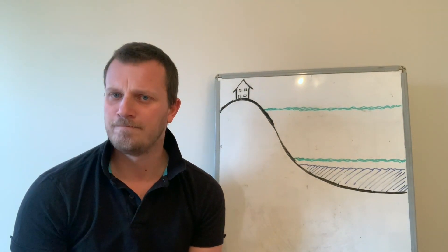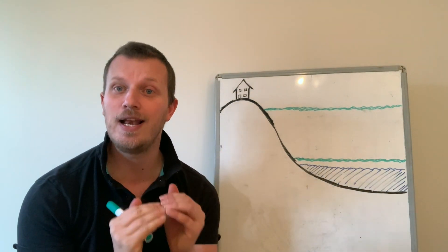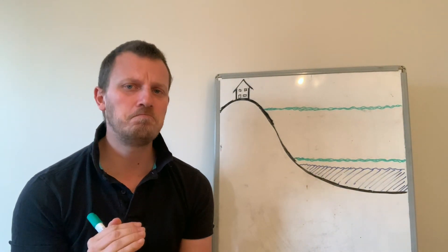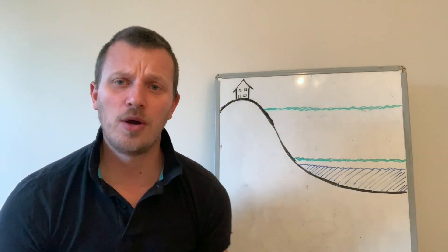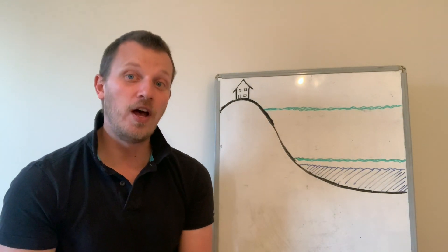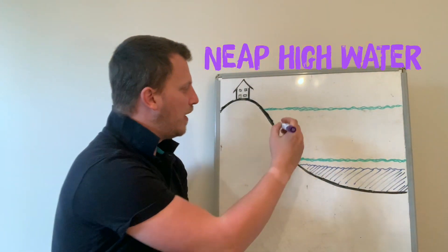And instead of getting a really, really low, low water, it's not that low. So a high water for a neap tide would look a bit like this.